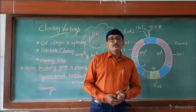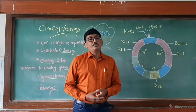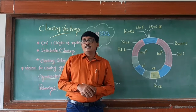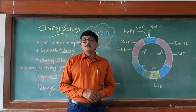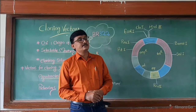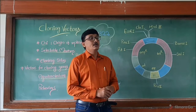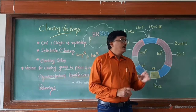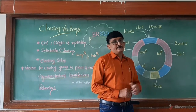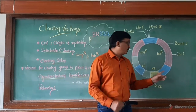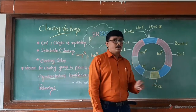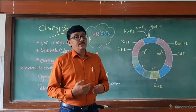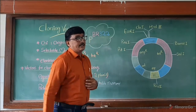Beside ORI, you can see one more gene, that is ROP. ROP is a gene which helps in the synthesis of proteins required for the replication of this plasmid.